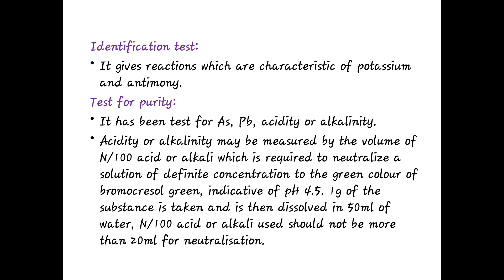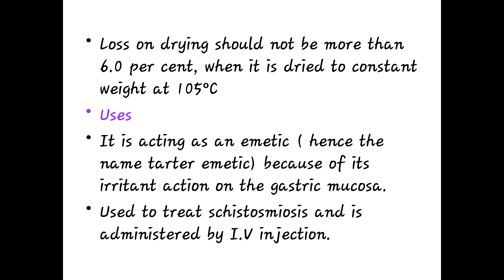For the identification test, it gives reactions characteristic of potassium and antimony. For the purity test, it is tested for arsenic, lead, and acidity or alkalinity. Acidity or alkalinity is measured by N/100 acid or alkali required to neutralize a solution to the green color of bromocresyl green, indicating pH 4.5. One gram dissolved in 50 ml water; N/100 acid or alkali used should not exceed 20 ml. Loss on drying should not be more than 6% when dried to constant weight at 105°C.